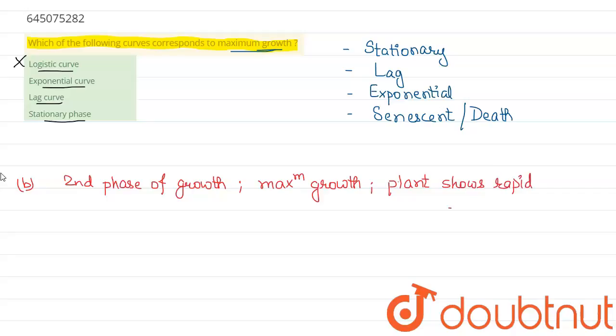rapid increase in height. Rapid height increase during exponential phase, so this option is correct as it corresponds to maximum growth.